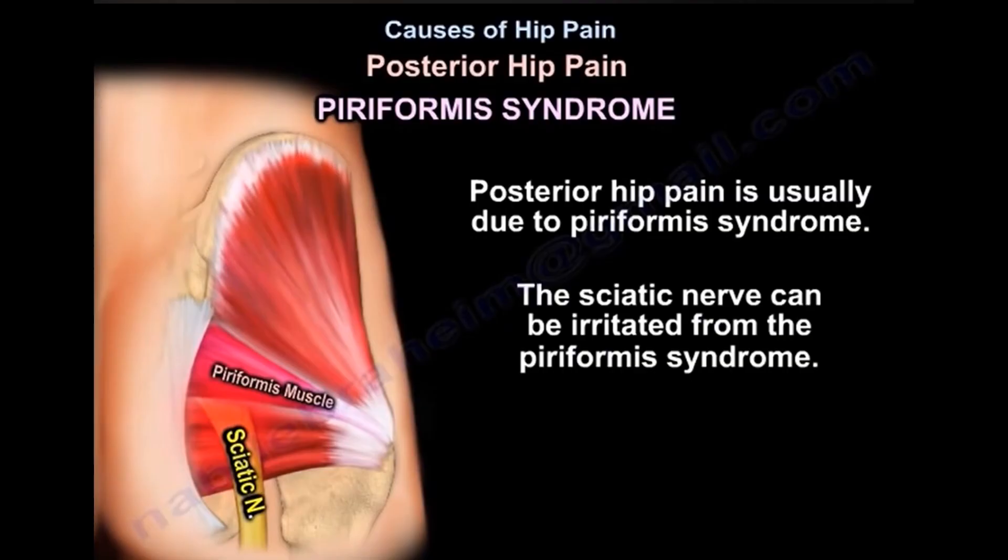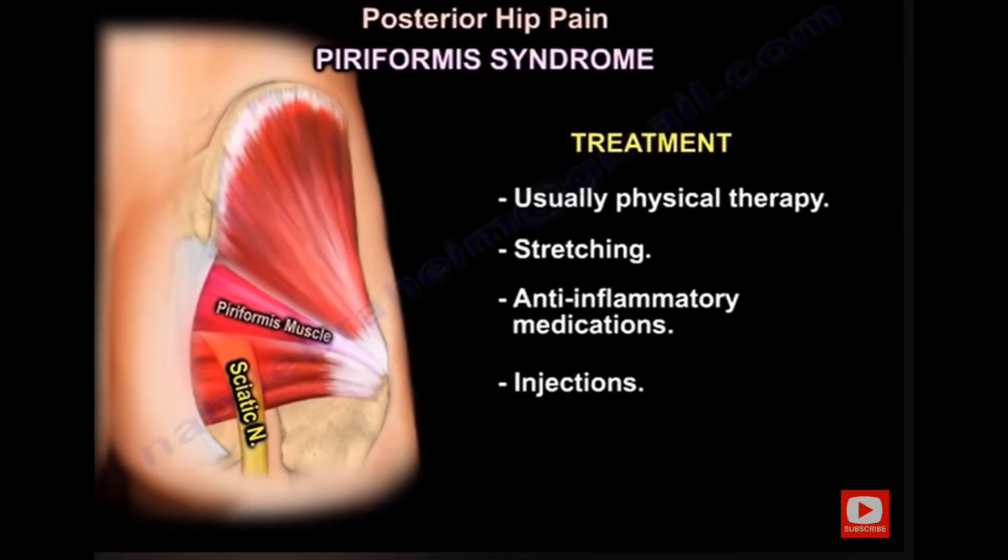Piriformis syndrome will give us posterior hip pain due to irritation of the sciatic nerve. The treatment is usually conservative, with therapy, stretching, anti-inflammatory medication, and injections. Surgery is the last resort.